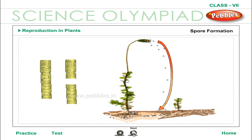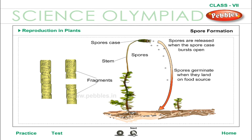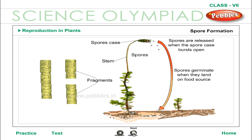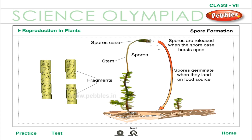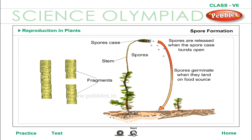Spore Formation: Some lower plants such as ferns, mosses and lichens multiply asexually through spores. Spores are microscopic, single-celled or several-celled reproductive bodies that are mostly spherical in shape and are protected by a thick wall when conditions are unfavourable, like humidity and temperature. Once they land on favourable conditions, these spores burst out of the thick wall, start multiplying and grow into new individuals.